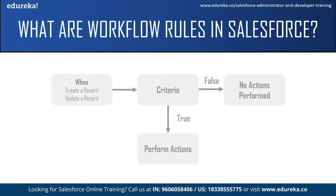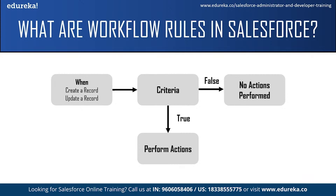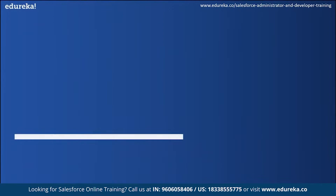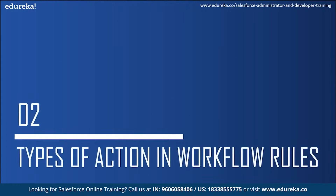Criteria is basically the condition that causes the workflow rule to run. Only if the condition is true are the actions automatically performed; if the condition is false, the workflow rule does not apply. Actions are automatic tasks which are performed after the criteria is met, or when the condition is true. Now let us move on to understand what are the automated actions that can be performed in workflows.